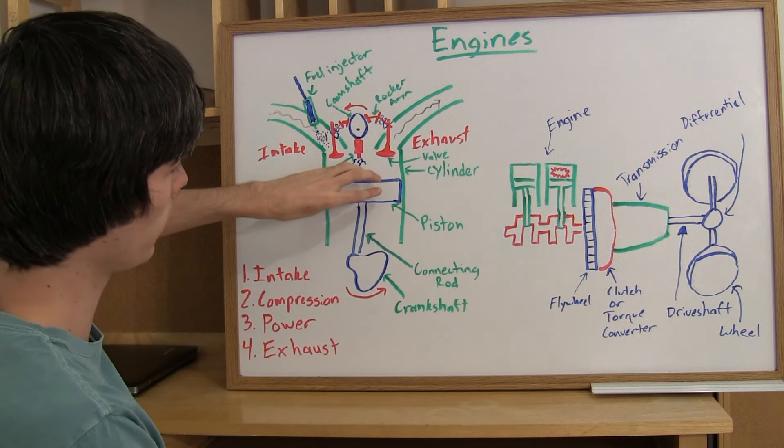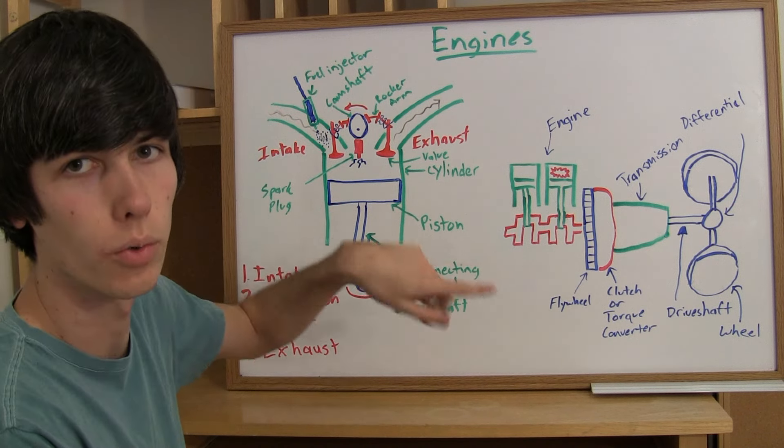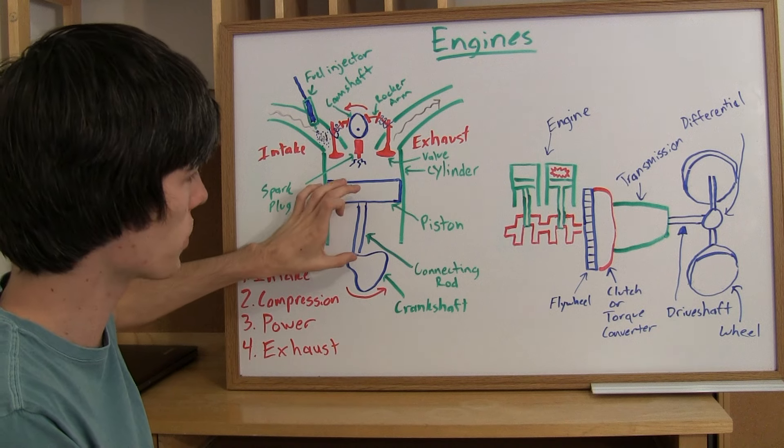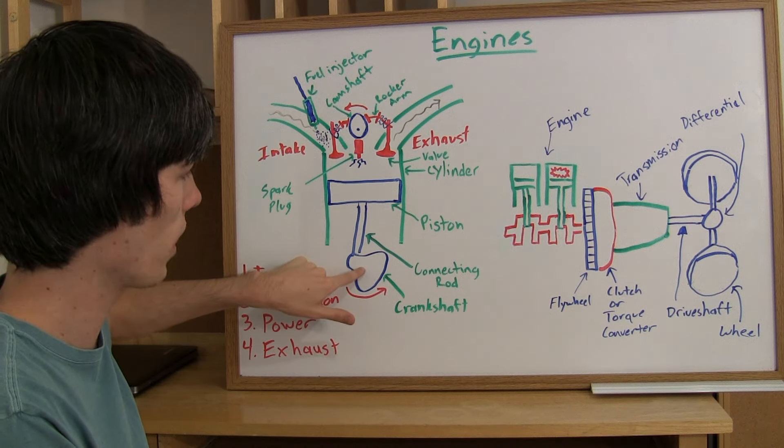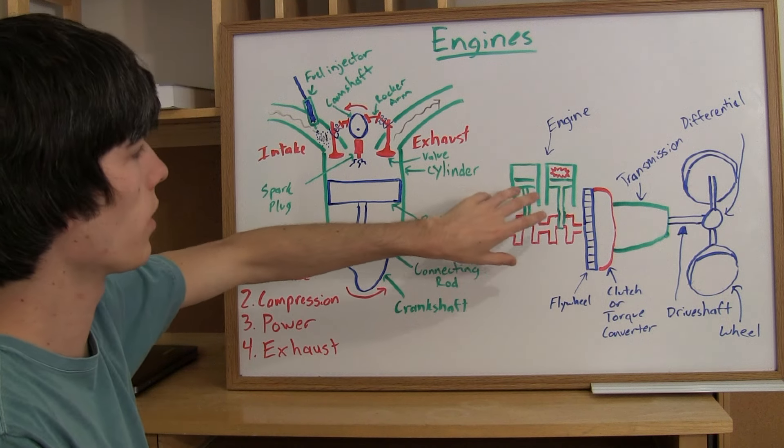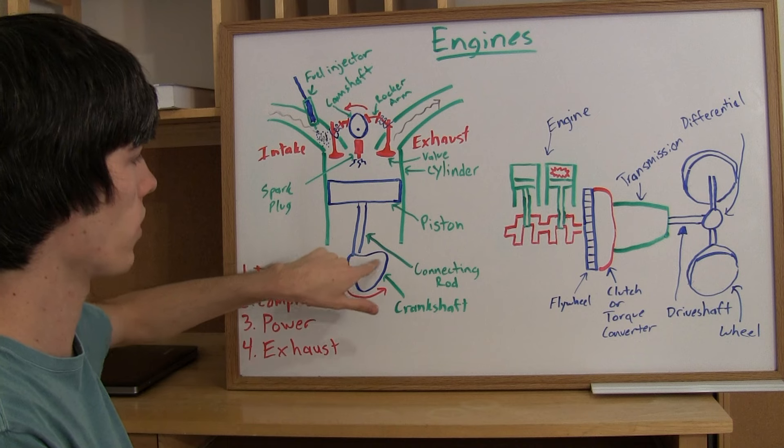So we've got a piston here. This is what moves up and down and you turn this vertical motion into rotational motion in order to move your car. We've got the connecting rod which connects the piston to the crankshaft. We've got the crankshaft which is connected to all of the different pistons within the engine and so they all supply that torque to this rod.